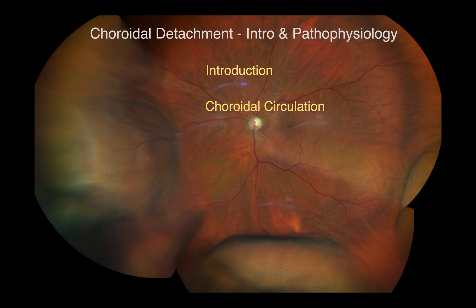The suprachoroid is the area between the choroid and the sclera and consists of fibrous lamella, melanocytes and processes of fibroblasts. In a healthy eye, the suprachoroidal layer is about 15 microns thick.